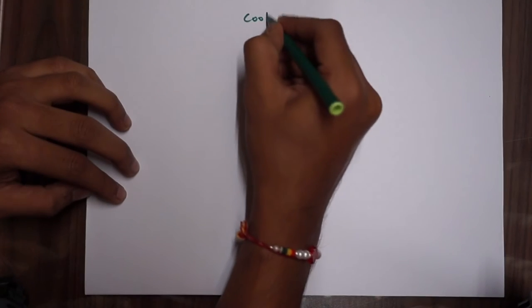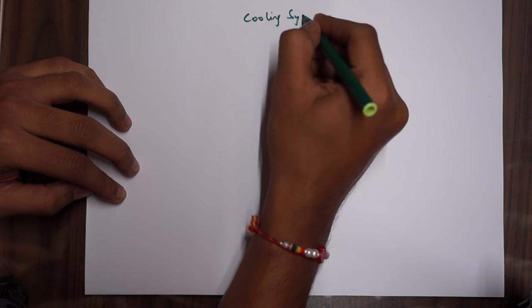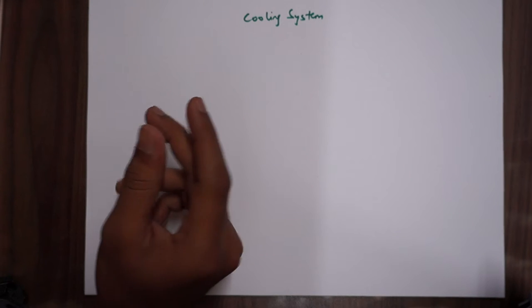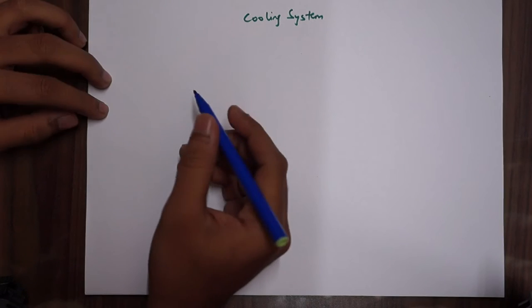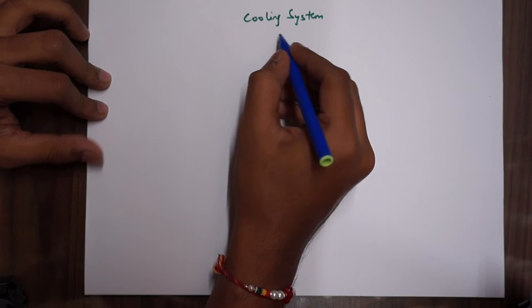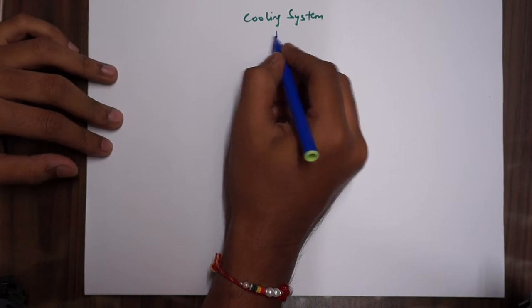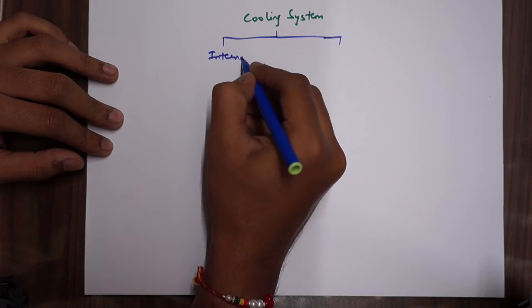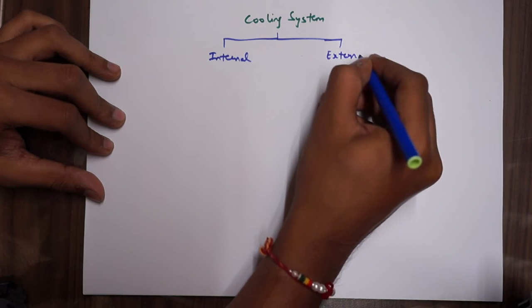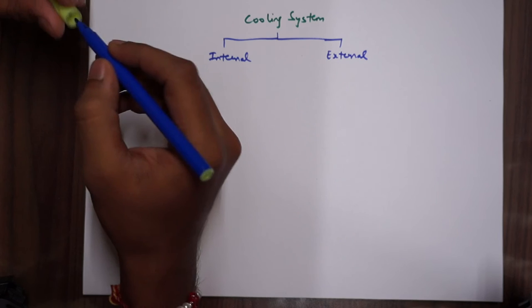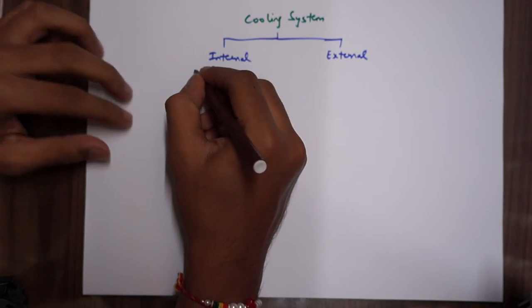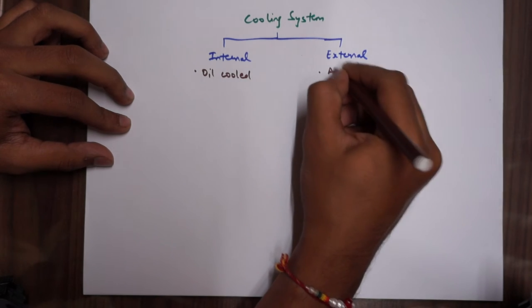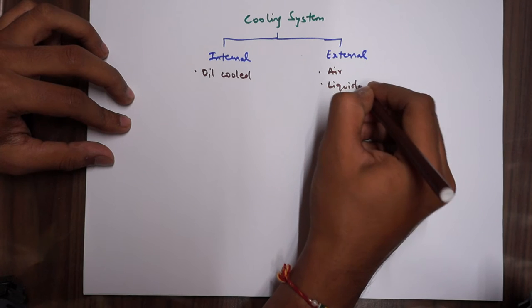Let's get started with the cooling system. Today's video will be relatively very easy to understand, there's not much you have to concentrate on, just a careful listen once is enough. Cooling system of a piston engine is generally divided into two parts: internal and external.